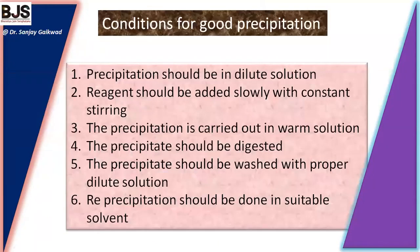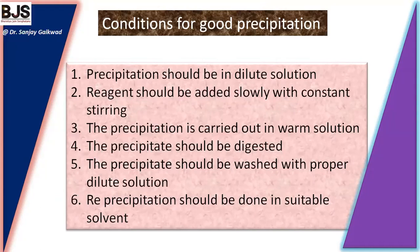Conditions for good precipitation: the precipitation should be carried out in dilute solution; reagent should be added slowly with constant stirring; precipitation should be carried out in a warm solution; the precipitate should be digested; the precipitate should be washed with the proper dilute solution; and reprecipitation should be done with a suitable solvent.